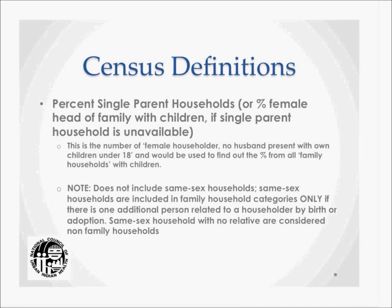Note that this does not include same-sex households. Same-sex households are included in family household categories only if there is one additional person related to a householder by birth or adoption. Thus, same-sex households with no relatives are considered non-family households and would not be included in family tabulations.